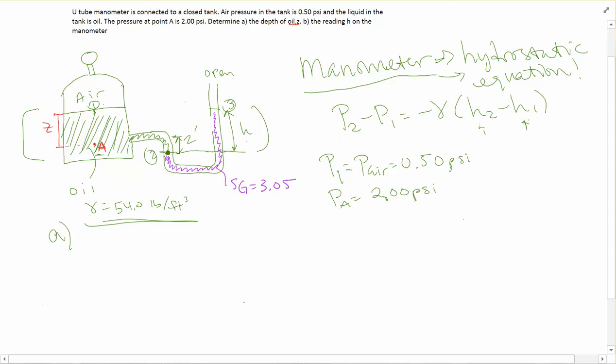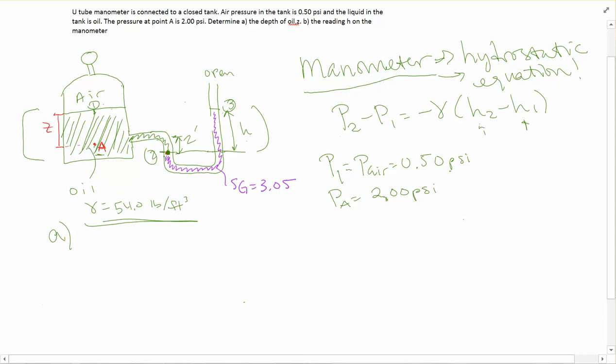Let's see what we were given. We were given two pressures — the air pressure in the tank, so that's going to be this pressure right here, and I've labeled it point 1 at the top of the oil. We were also given the pressure at point A, which is 2.0 psi. I've labeled those so we can use them later.